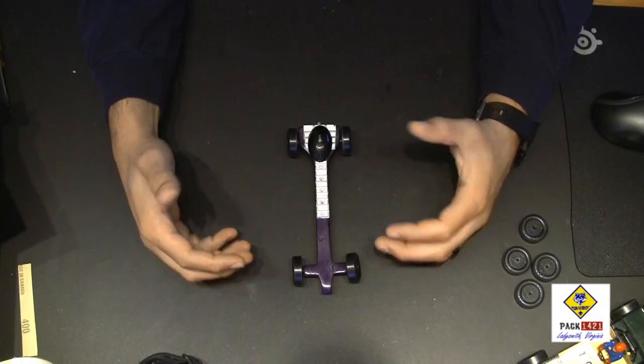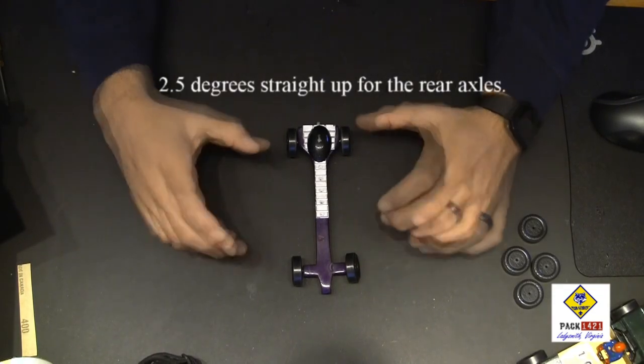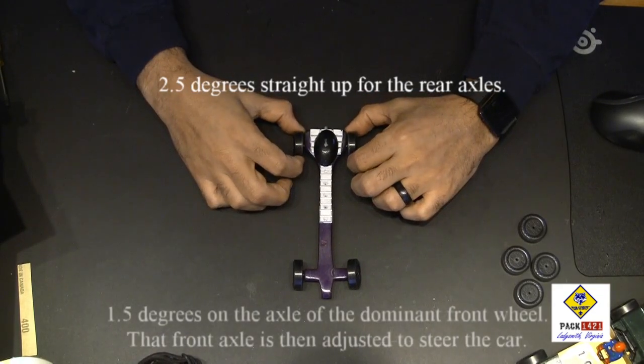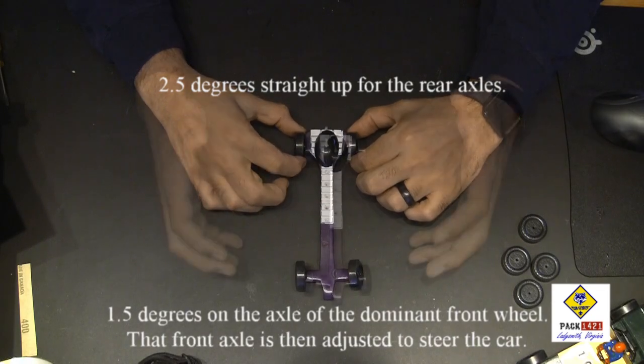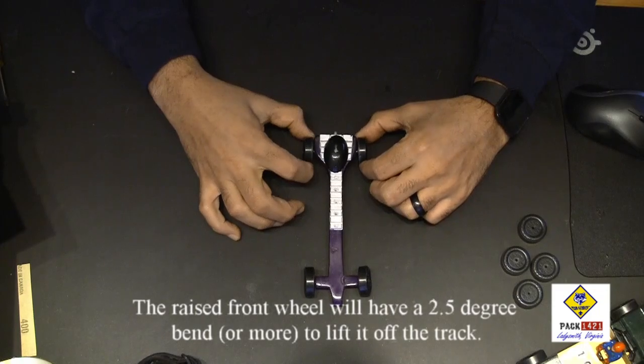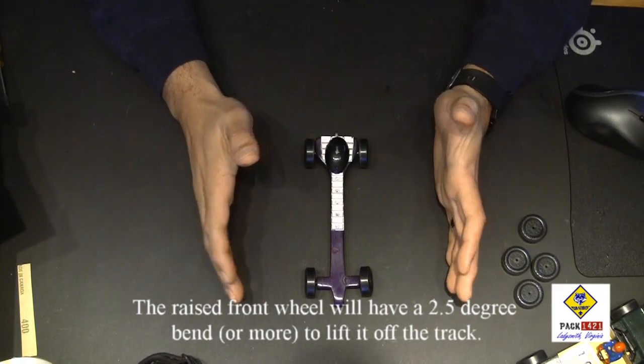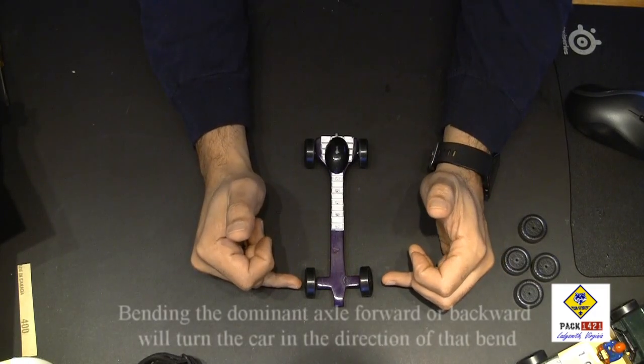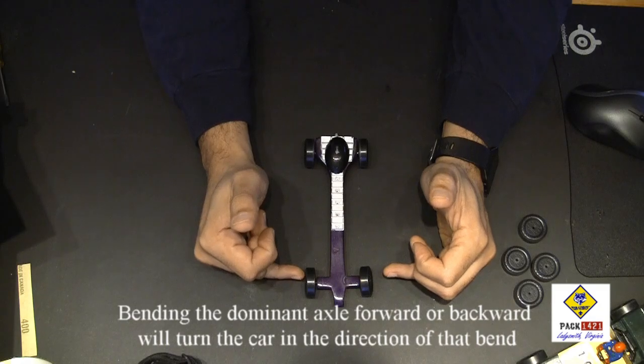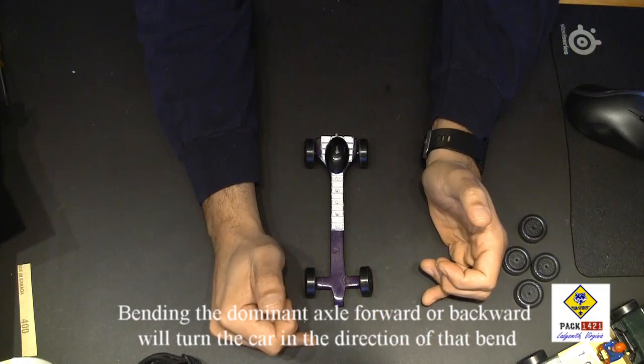Now, the other thing that we do with a rail rider car is we bend all the axles to a particular degree. The reason for this is so that the wheels ride up against the axle heads and don't touch the body at all. This not only helps us keep the rear wheels off the rails, but it also lets us set the car up for a particular alignment very predictably. So by having the front axles bent, if they're bent towards the back, the car is going to steer to one direction. If they're bent towards the front, the car is going to steer towards the other direction.